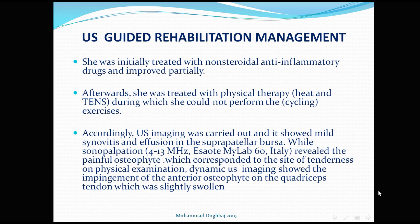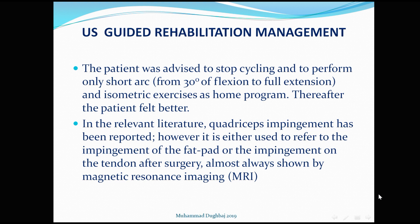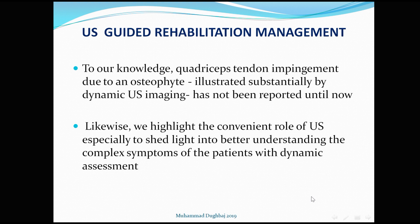The patient was advised to stop cycling and perform only a short arc from 30 degrees of flexion to full extension, along with isometric exercises as a home program; thereafter the patient felt better. In the relevant literature, quadriceps impingement has been reported either as impingement of the fat pad or impingement on the tendon after surgery, almost always shown by MRI. To our knowledge, quadriceps tendon impingement due to osteophytes illustrated by dynamic ultrasound imaging has not been reported until now.